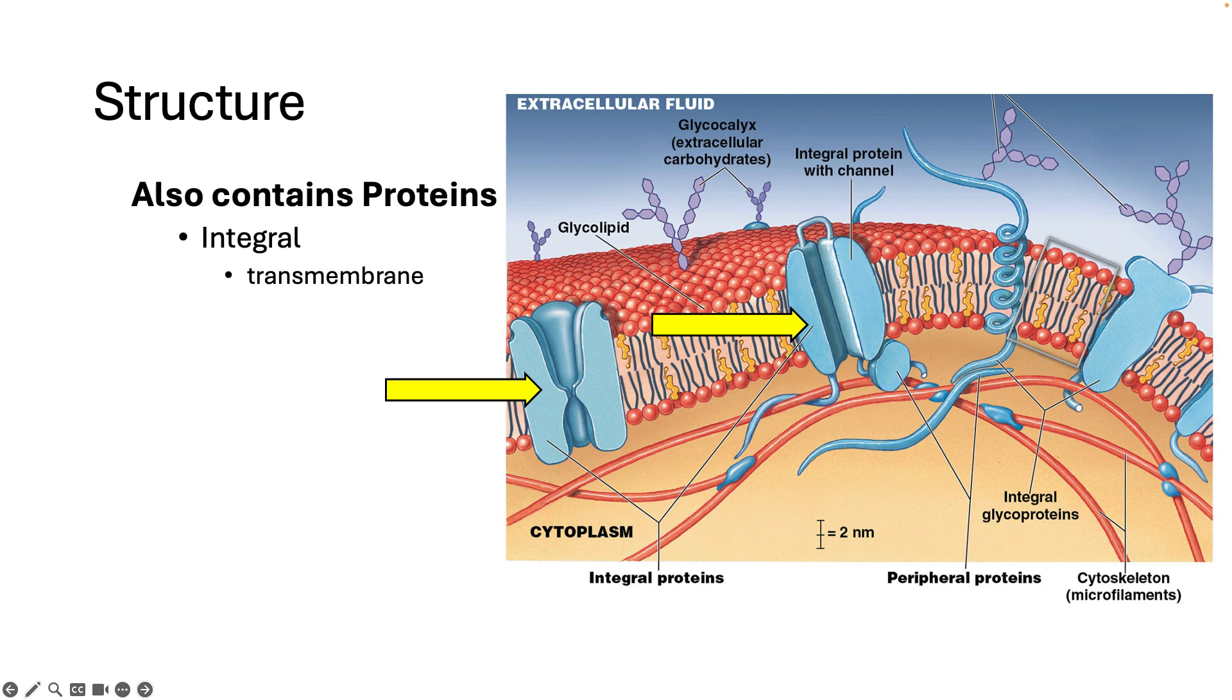Other integral proteins are used as receptors and binding to them signals to the cell to react in some way. There are also some proteins that are just kind of hanging around on the periphery, and they are called peripheral proteins.